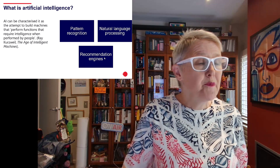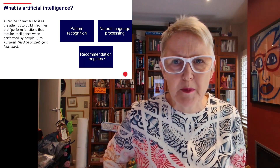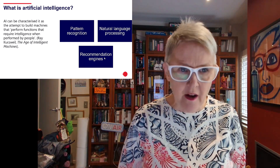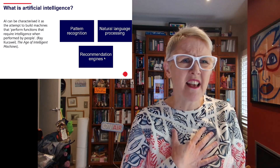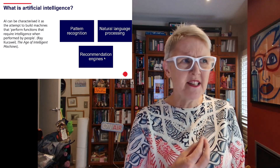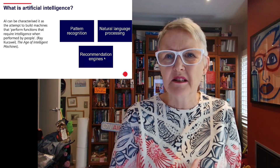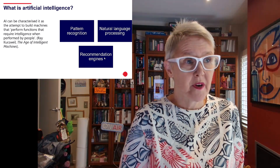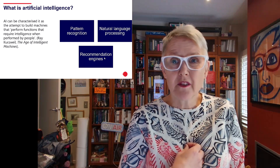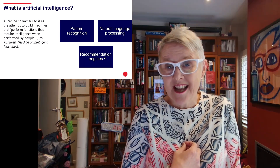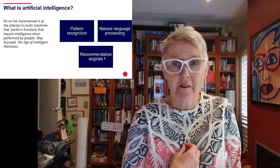So basically, as the slide suggests, these are the kinds of things — intelligence in this context means machines that can recognize patterns, that can process language, and make suggestions or recommendations. When we think about humans, one of the first signs of intelligence is being able to recognize things, especially faces.